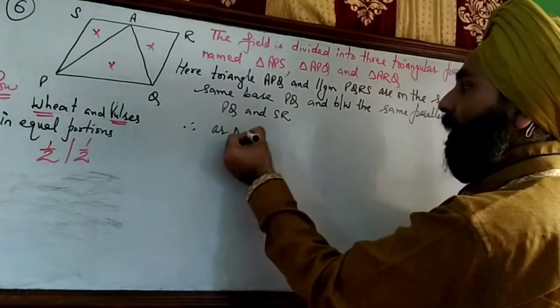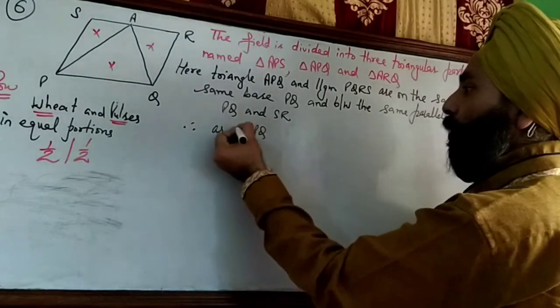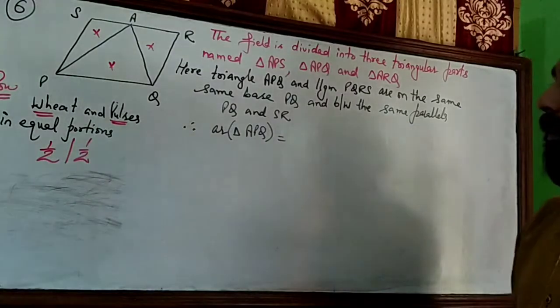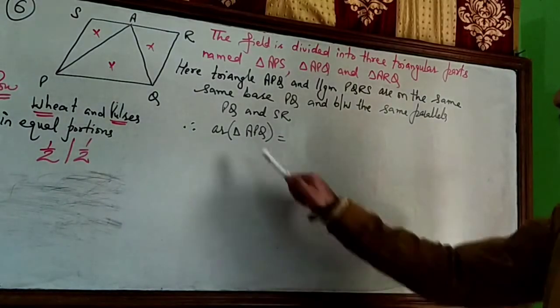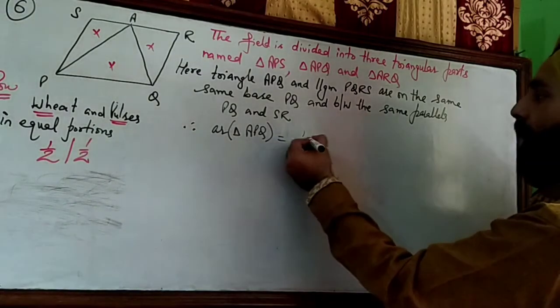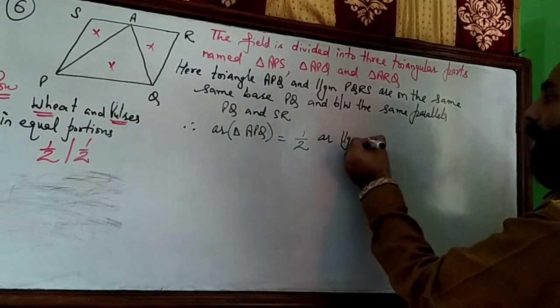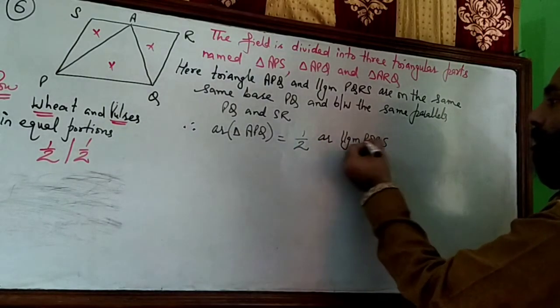Therefore, area of triangle APQ: when a triangle and a parallelogram are on the same base and between the same parallels, then area of triangle is half of the area of parallelogram PQRS.